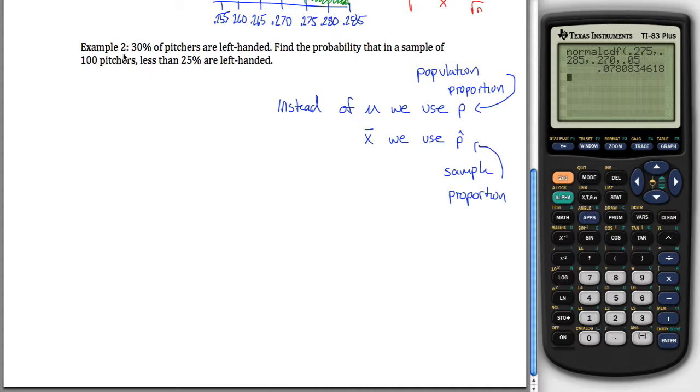So how do we do this problem? Okay, so first of all, what's the problem asking for? It wants to know the probability that in a sample of 100 pitchers, so there's our value for n, our sample size, less than 25% are left-handed, and what's given in the problem is that 30% of all pitchers are left-handed. In other words, our population proportion, the thing we'll use the letter P for, is 30%.